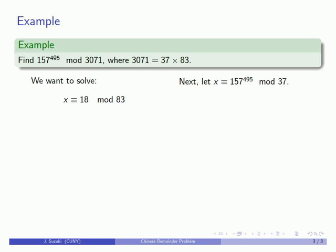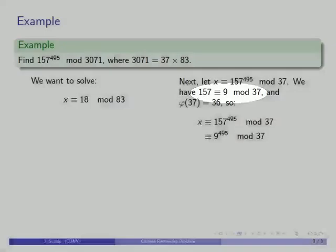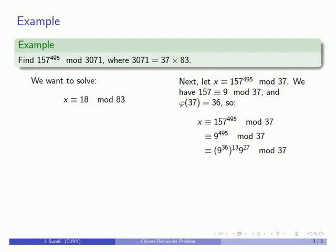Now let's take a look at the second congruence. I want x to be congruent to 157 to the 495th mod 37. Again I can reduce 157: 157 is congruent to 9 mod 37. 37 is prime, so phi of 37 is 36. Anything to power 36 is congruent to 1 mod 37. So I can reduce this: 157 becomes 9. 495 is 36 times 13 plus 27, so this exponent 495 becomes 9 to the 36th to the 13th times 9 to the 27.